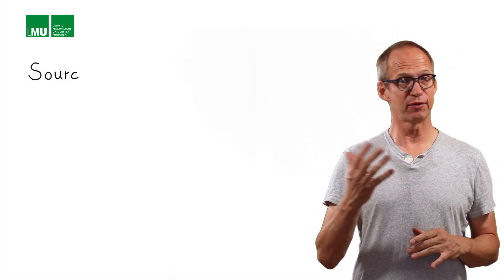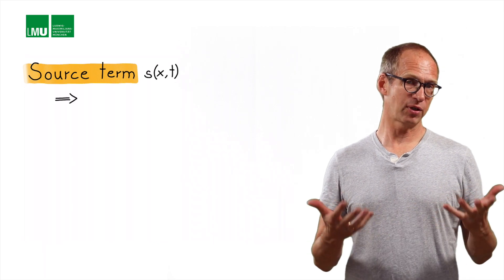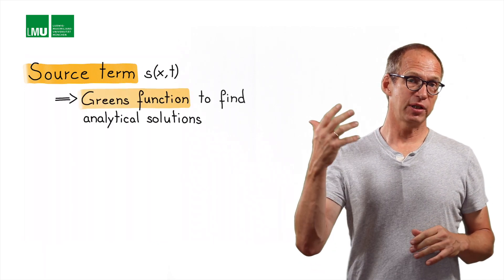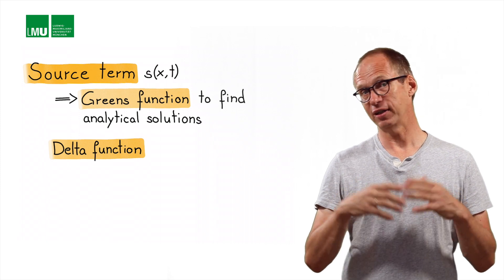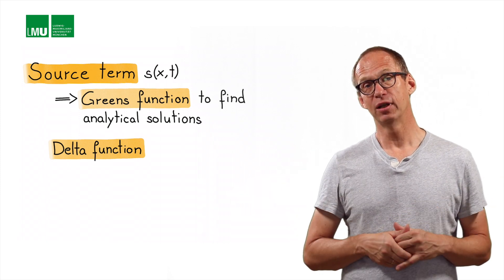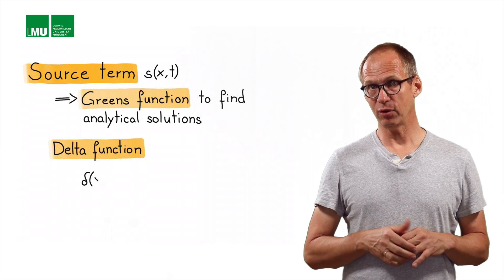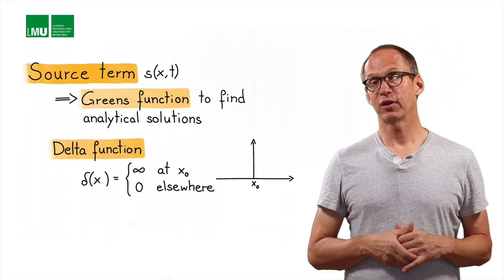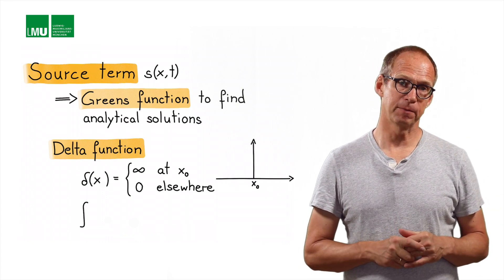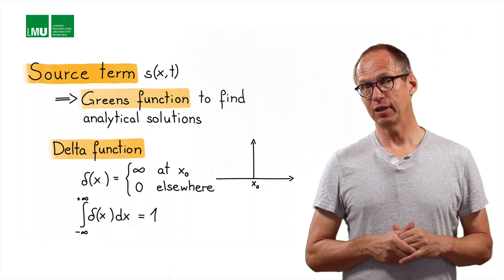What if we have a source term S(x,t) in the acoustic wave equation? To find analytical solutions for this situation, we make use of the concept of Green's functions. For that, we define a source using delta functions. Recall the definition of a delta function in space or time at point x0 or t0: the delta function is infinite at point x0 and zero elsewhere, and its integral over all space equals 1. That normalization will be very important later for the numerical implementation.